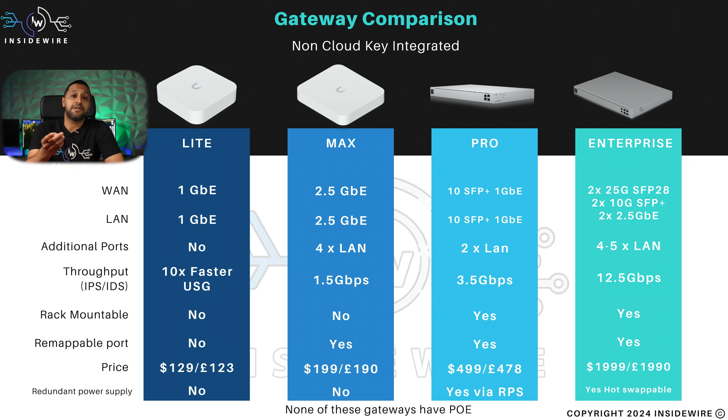The first question I generally ask myself is: am I hosting my own cloud key or am I going to get one with one built in? Let's start with the first bunch of gateways that actually don't have a UniFi cloud key built into them. This would mean that you'd need something external — whether you use the UniFi hosting platform, a cloud key, the cloud key enterprise, or host it within your own network or somewhere in the cloud. This can be done on Windows, Linux or macOS. These are the four options when it comes to non-cloud key integrated.